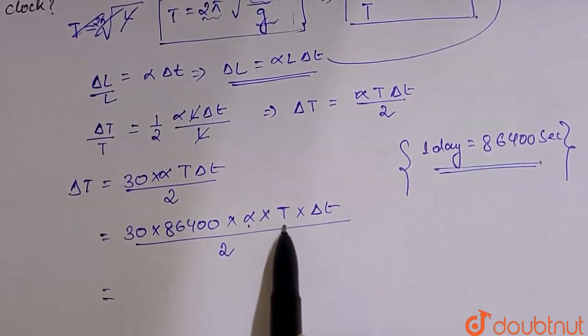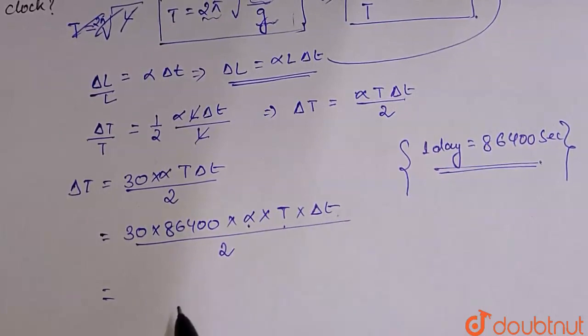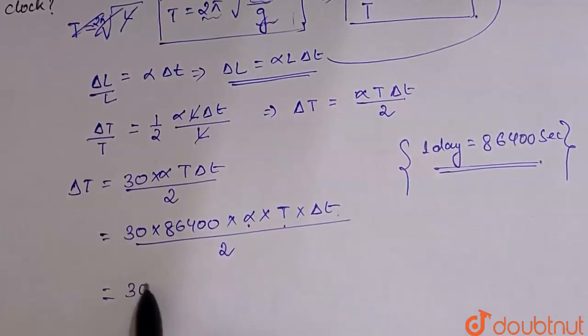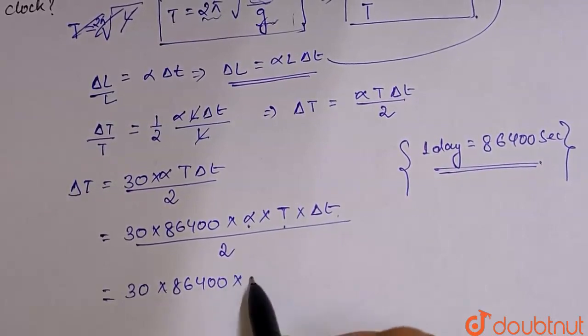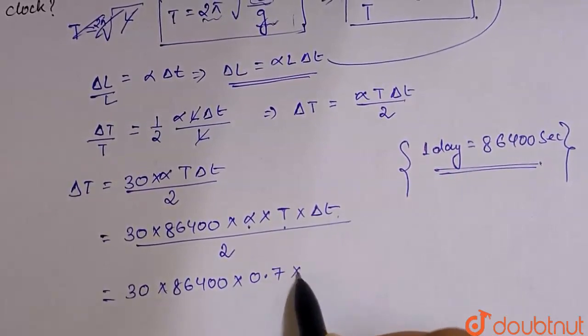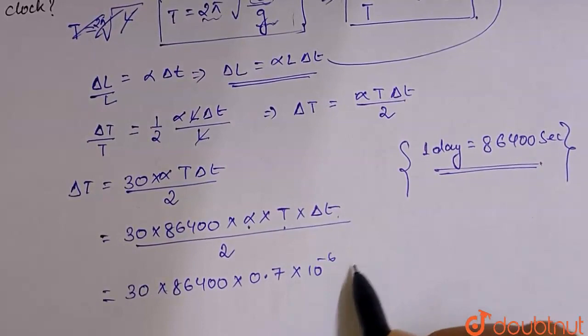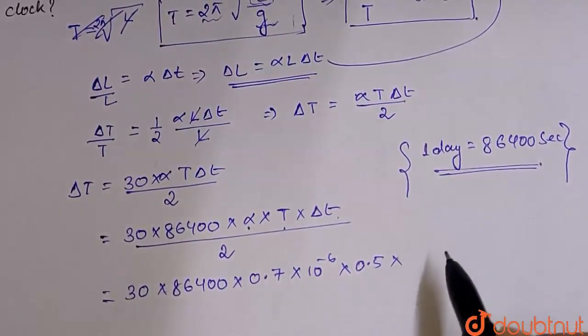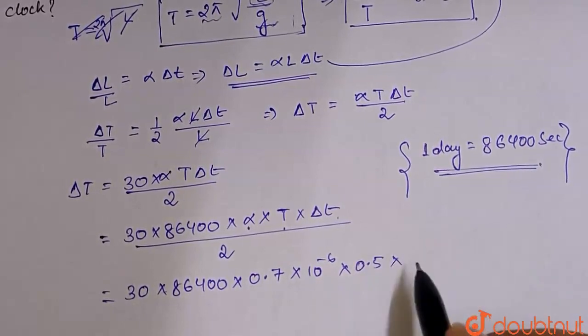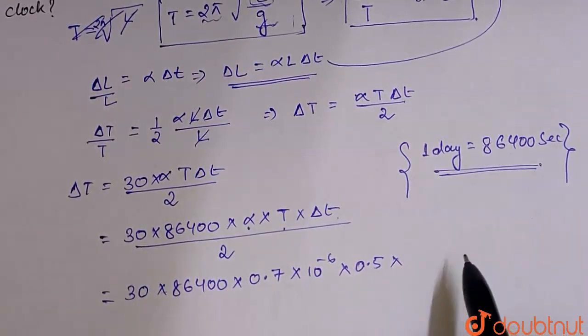Now we know time period, pendulum clock time period, change in the temperature. Put the values: 86400 into alpha value 0.7 into 10 minus 6 per degree celsius, the original time period 0.5, change in the temperature 25 degree accurate and 35 in country, that is 10.